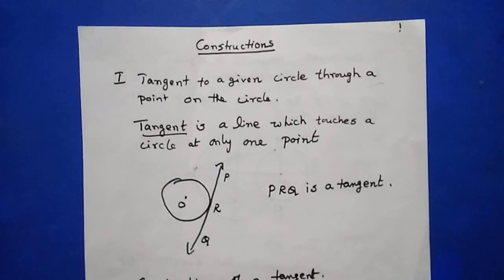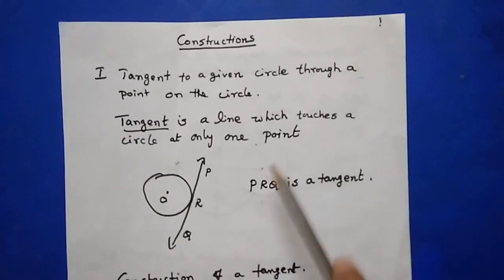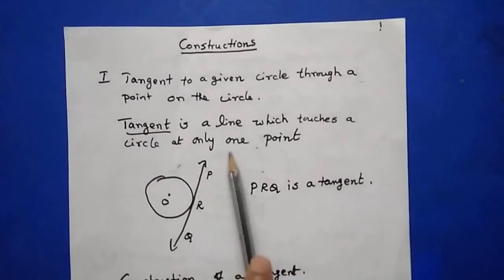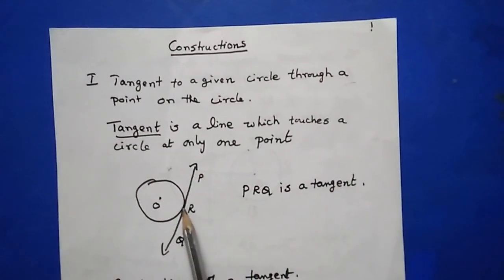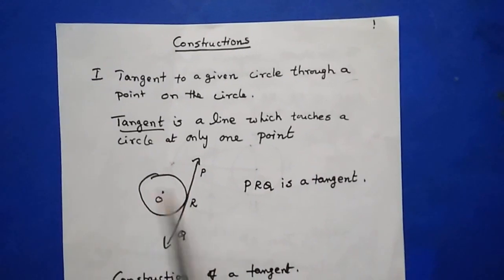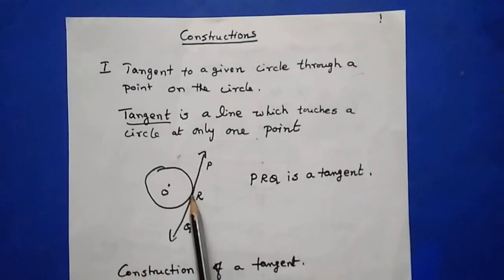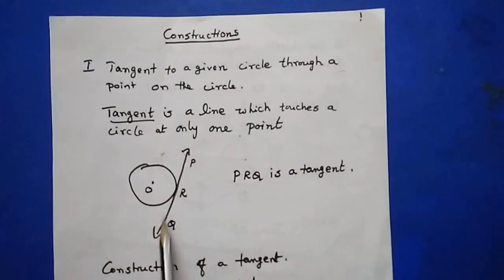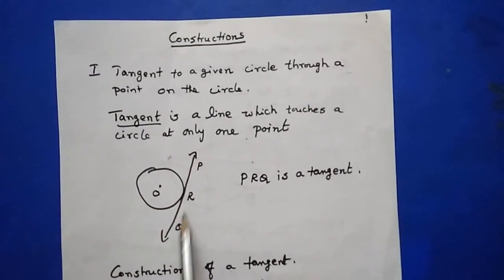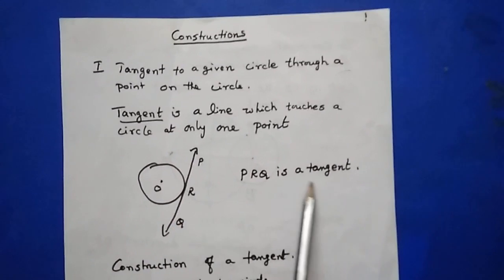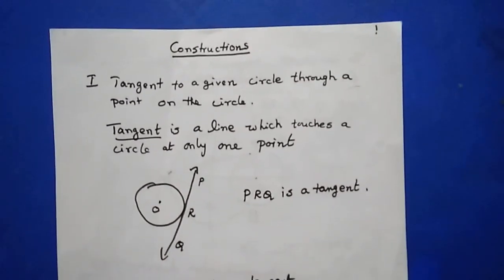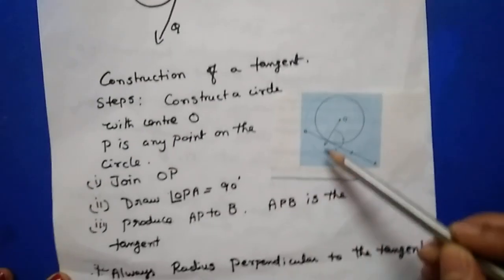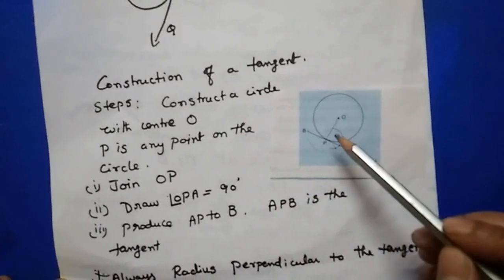A tangent is a line which touches the circle at only one point. Here the tangent is touching the circle at only one point. PRQ is called the tangent.